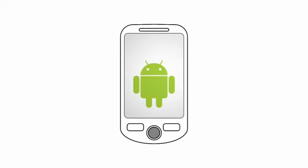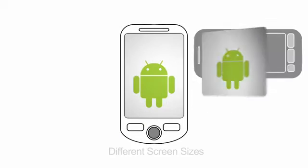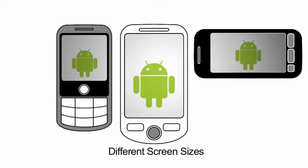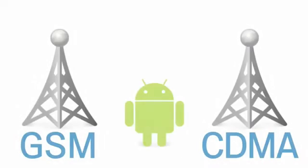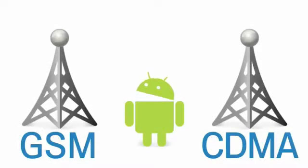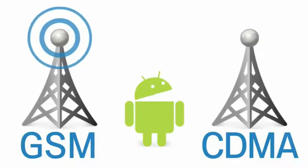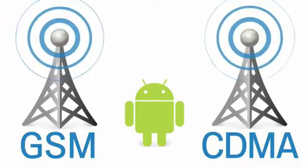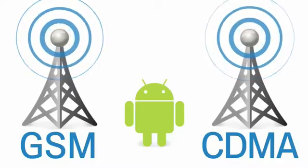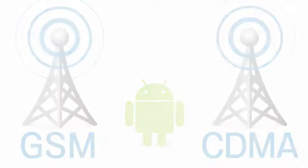Android 1.6 enables applications to be rendered properly on different display resolutions and densities. Developers can also specify the types of screens supported by their applications. Android 1.6 also includes support for CDMA in the telephony stack, meaning Android can run on even more devices and networks.